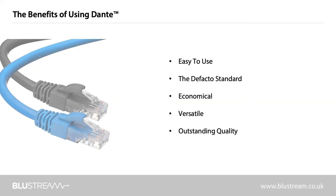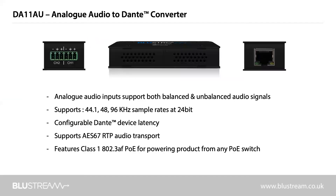So now that we've had a quick look at Dante as a technology, let's look at the two products Bluestream are currently developing. First is our DA11AU, an analog audio to Dante converter. This product will essentially allow you to insert either two mono audio signals or a left-right stereo signal into a Dante ecosystem. The unit supports sample rates between 44.1 and 96 kHz at 24 bits, and any latency you wish to add can be defined within the Dante Controller software. The product is powered via PoE from the LAN switch it would be connected to — a very simple device, but potentially very powerful for allowing a standard audio source to be inserted into a Dante network.